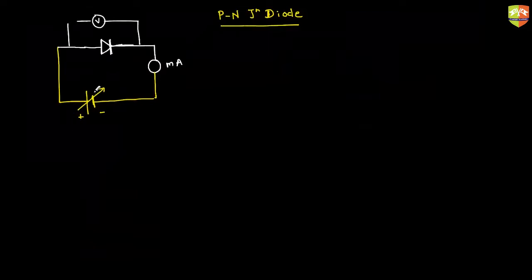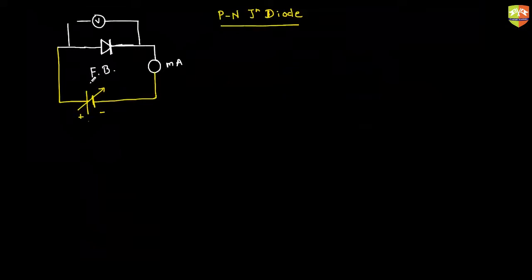This supply voltage — the potential difference — can be varied, which is why there is an arrow symbol. I can change this voltage and accordingly get different values of V and I. This is the forward bias setup. For reverse bias, I can have a very similar looking circuit.